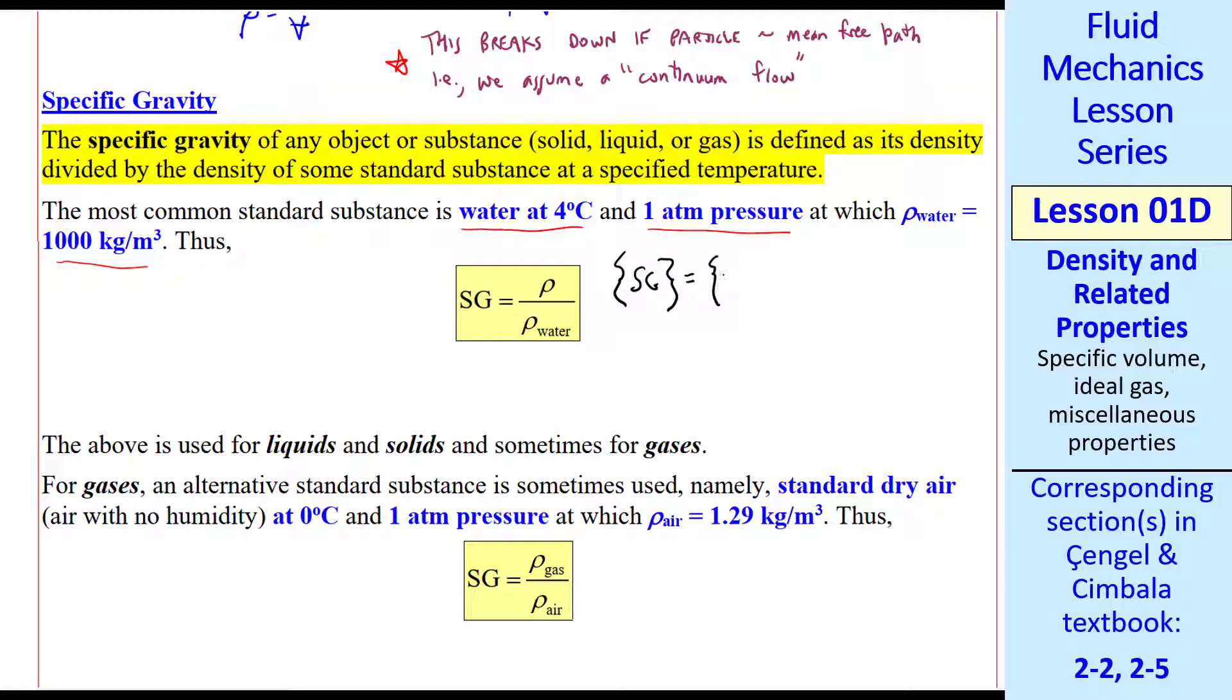The dimensions of specific gravity are expressed as a dash or a 1, meaning it's dimensionless. We can see that easily it's a density divided by another density, so it has no dimensions. We do the same thing with units. In other words, there's no units either.